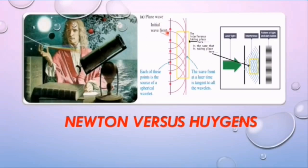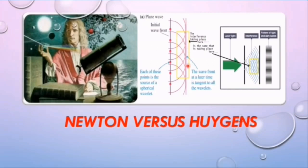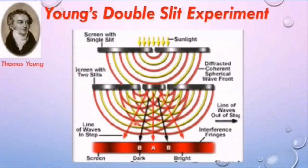Huygens' principle states that every point on a wavefront gives rise to secondary wavelets, which spread out in all directions with the speed of the wave. The new position of the wavefront at time t can be determined using Huygens' principle by drawing a line tangent to all the wavelets. This wave-particle debate of light was resolved by the famous physicist Thomas Young's double slit experiment. On the basis of the interference pattern observed on the screen, Young concluded that light must be a wave, as interference is a property of waves.